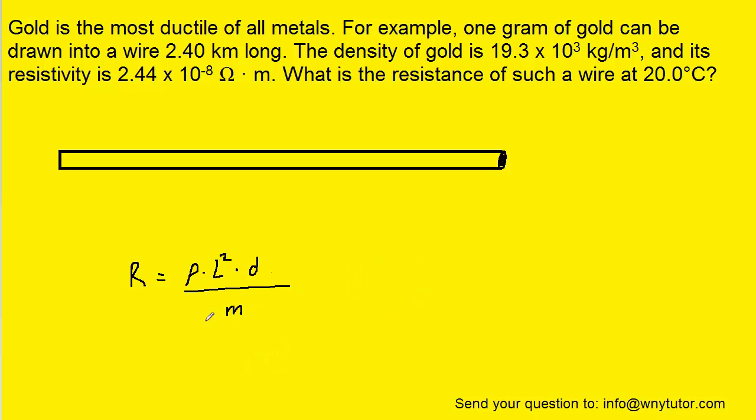Now fortunately, we know all of the quantities on the right-hand side of the equation. For example, the mass m was given to us as 1 gram. Of course, we'll have to use kilograms, so that's going to become 1 times 10 to the minus 3 kilograms. The density of the gold wire was given to us in the question directly and it's already in its standard unit.